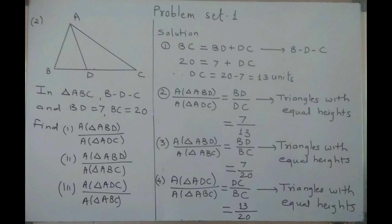Here we have given 3 triangles. If we consider bases: in triangle ABD, BD is the base; in triangle ADC, DC is the base; in triangle ABC, BC is the base. All the bases are collinear and opposite vertex A is common. So all these triangles have equal height.